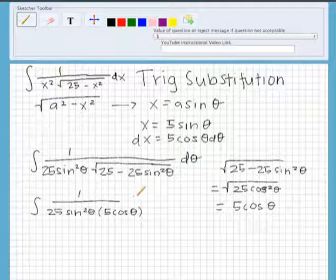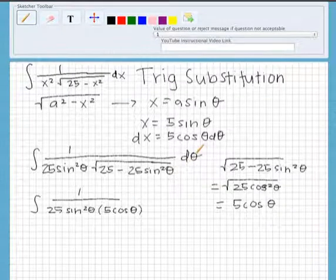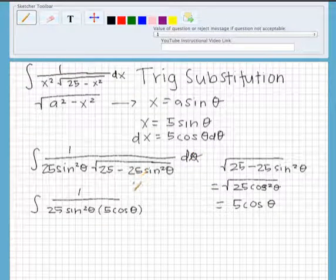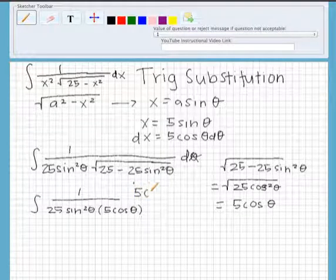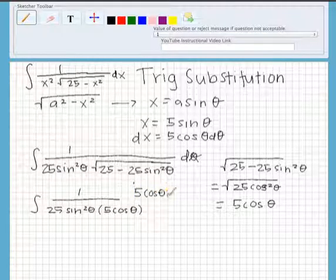We're going to plug in dx, which ends up being 5 cosine theta d theta on the top.